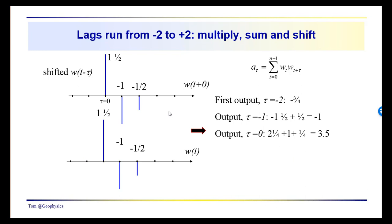Here we have everything lined up, so we should just have the sum of the squares. The sum of the squares: 1.5 times 1.5 is 2.25; minus 1 times minus 1 is 1; minus 1.5 times minus 1.5 is 2.25. Adding all those together, we get 3.5.